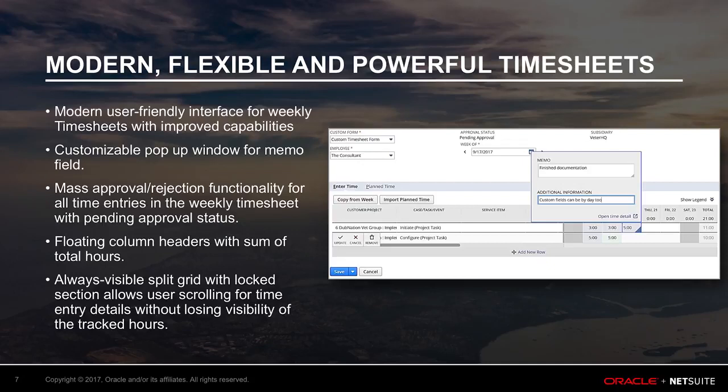You can process all reviews in just a few clicks. The feature also includes pending approval status in the view. On the timesheet grid itself, we added floating column headers with sum of total hours, so you can see where you're entering time no matter how many items are on the timesheet. We also added a split grid with a locked section that's always visible, to allow user-scrolling time entry details without losing visibility of the tracked hours.